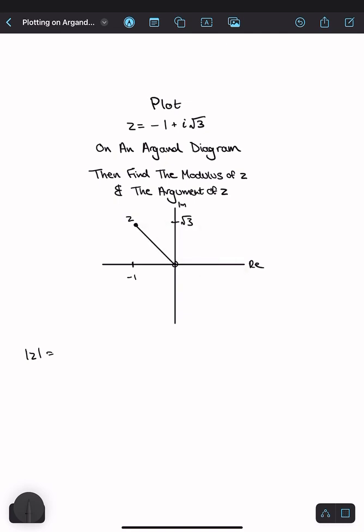If we look at this like a right angle triangle with side lengths 1 and root 3, we can do simple Pythagoras to find the modulus. So the modulus of z would be square root of 1 squared plus root 3 squared, which is just the square root of 1 plus 3, which is root 4, which is 2. So that is our modulus.